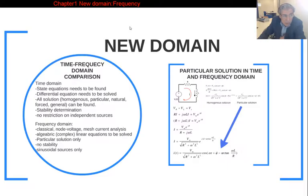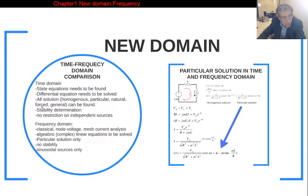There must be a method to write these state equations, as they are differential equations that need to be solved. In time domain solutions, we have seen homogeneous and particular solutions in mathematics, and we add two more: natural and forced solutions. These are physical solutions. The summation of particular and homogeneous solutions gives the general solution.